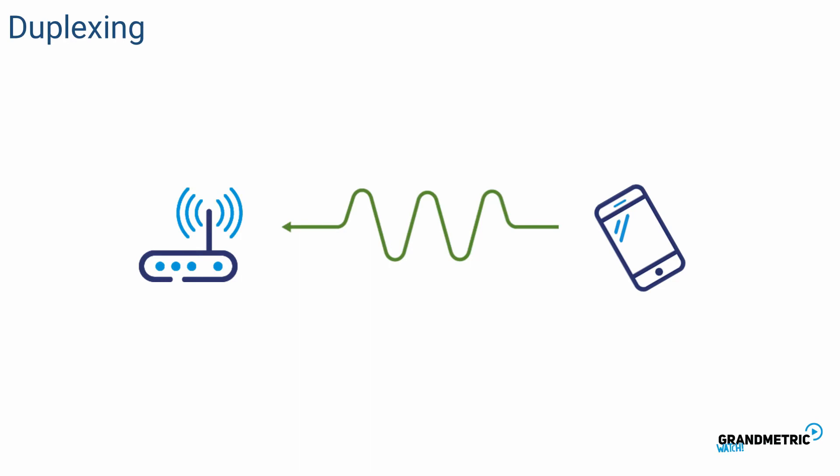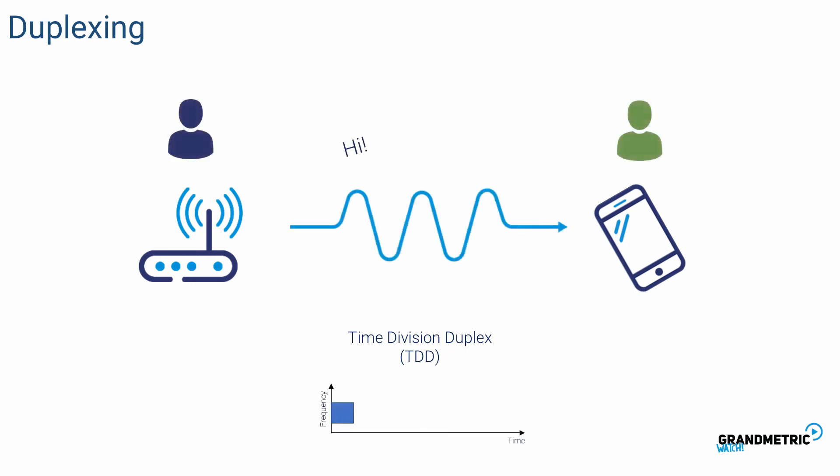How can we achieve such communication? One way to achieve this is to divide time into slots and use them for communication in one direction and some of them in the other direction. We can arrange slots in different ways depending if we want to send or receive more data.